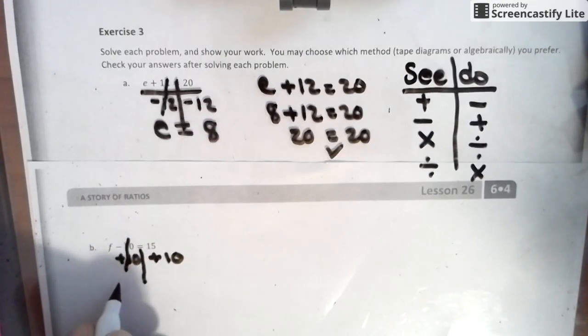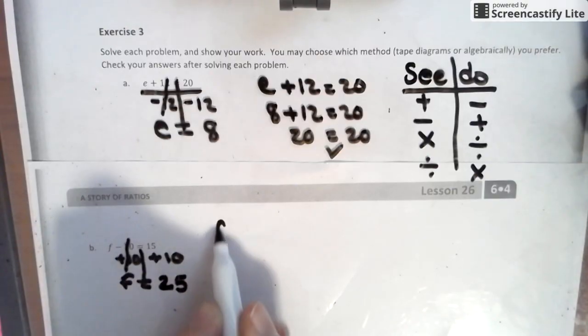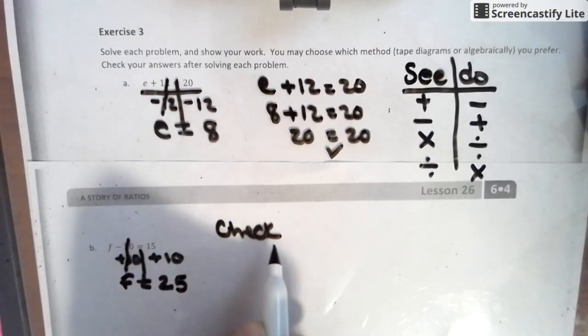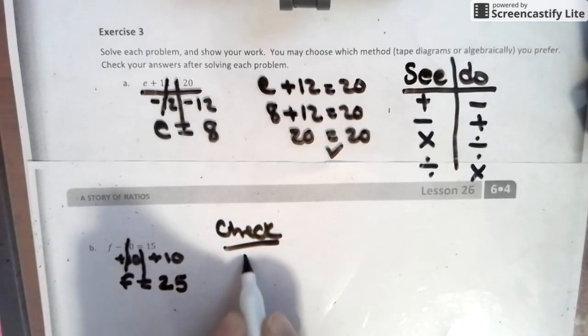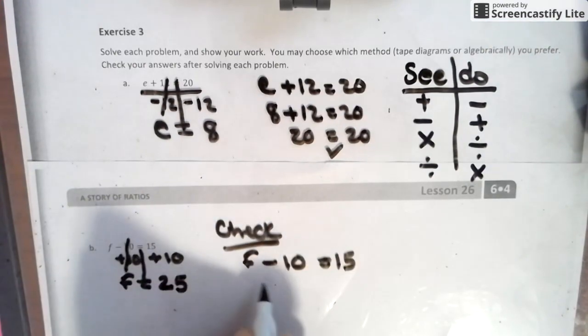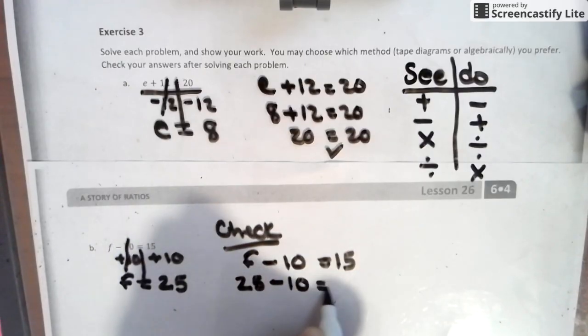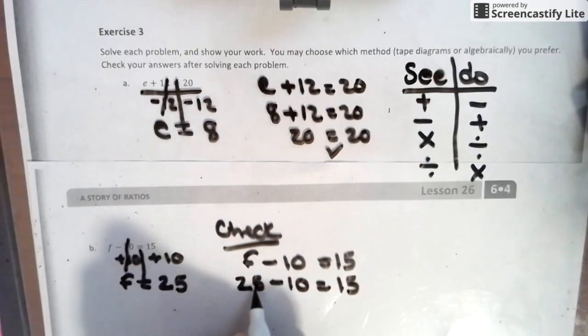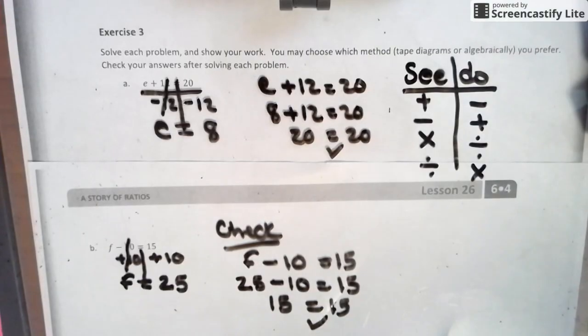This allows us to cross this out, keeping it balanced. F equals 15 plus 10, which is 25. Now we check. We take the original equation, we plug in the value that we just received for the solution, and we see if it makes sense. 25 minus 10 is 15. 15 equals 15. That is a check. So far so good.